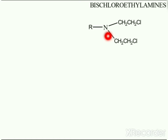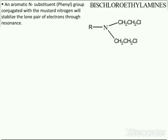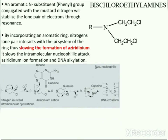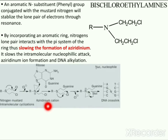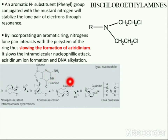The nitrogen atom of the nitrogen mustards contains a lone pair of electrons. An aromatic N-substituent in bischloroethylamines stabilizes this electron pair through resonance, so aromatic substitution results in fewer side effects. The mechanism involves nitrogen mustards forming an aziridinium cation through an intramolecular cyclization reaction. This highly reactive aziridinium cation quickly interacts with the 7th position of guanine residues, causing alkylation of DNA, which leads to DNA crosslinking and cell death.